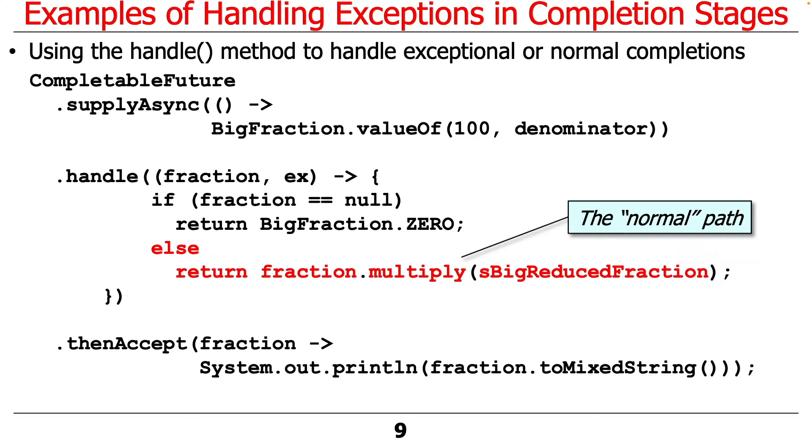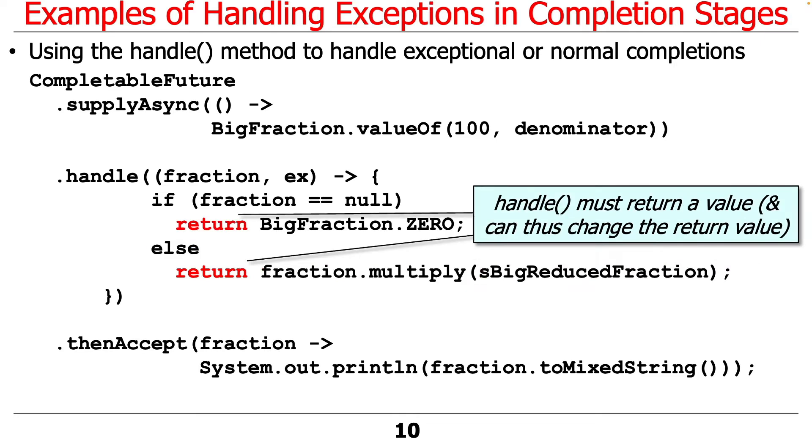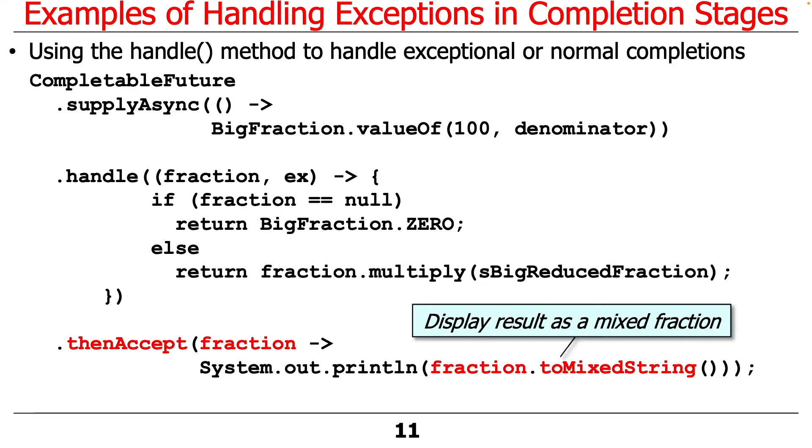In either case, whether we return zero or the results of multiplying this, then we're going to return a value. Notice that we always return a value, and the value can actually change, and we can also change the type if we wanted to. We don't change the type here, but we could. In this case, we're going to change the return value in the case of an exception. And no matter what happens, we print the results as a mixed fraction, which will either print zero or the result of multiplying the big fraction by the reduced fraction.